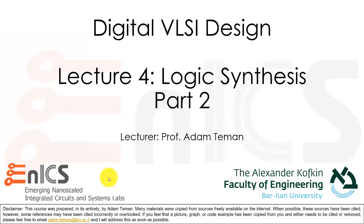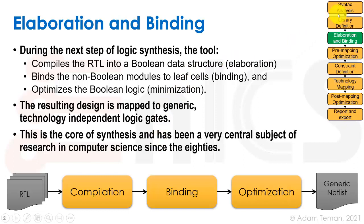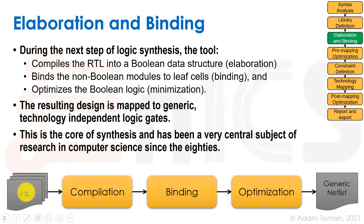Let's go back to the course slides and see how we talked about that. This is the flow of synthesis. It starts with syntax analysis — reading in our RTL and checking it — then we go to library definition before elaboration and binding. Elaboration is when we compile the RTL into a Boolean data structure. We may also have macros — hierarchical blocks already synthesized or hard macros with a lib file — so we do binding. We find them in our target libraries and bind them to the design. Then we optimize the Boolean logic in the pre-mapping optimization stage. The result is a design mapped to generic technology-independent gates, and what we have is a multi-level logic netlist of generic gates.